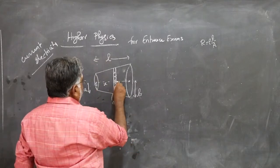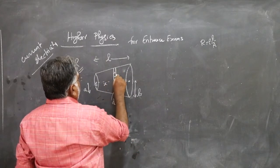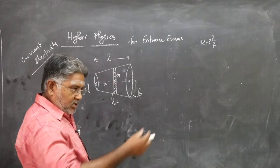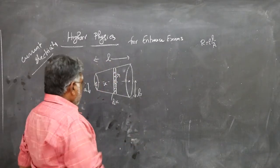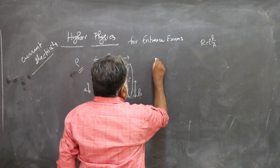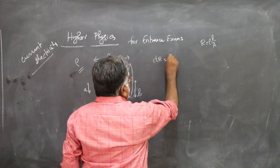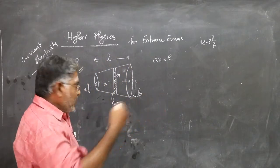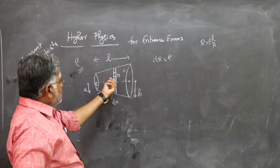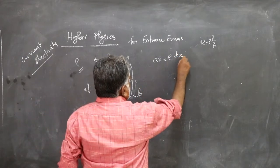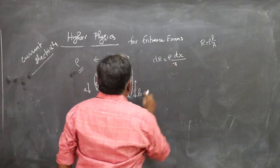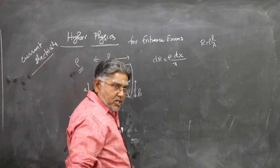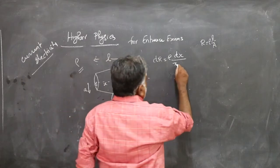I consider this radius to be R. Either here or here, you can take it as R, thickness too small. So for the element, the resistance dr is rho into L, the length of the element along x, meaning thickness of the element dx, by area of the element, area of cross section of the element, pi R squared.